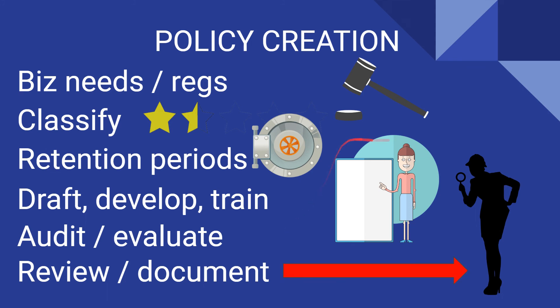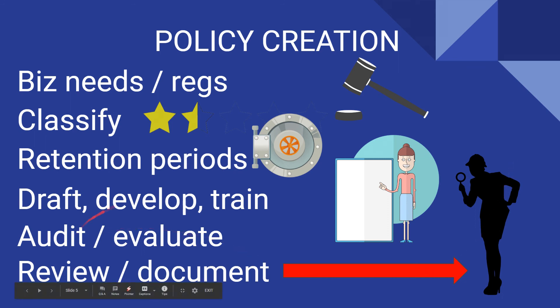This arrow should have pointed up to the audit and evaluating step. A review is much less formal — you just go over it to make sure it's up to date. An audit, on the other hand, is very formal: there's documentation, there are findings, and there's accountability.